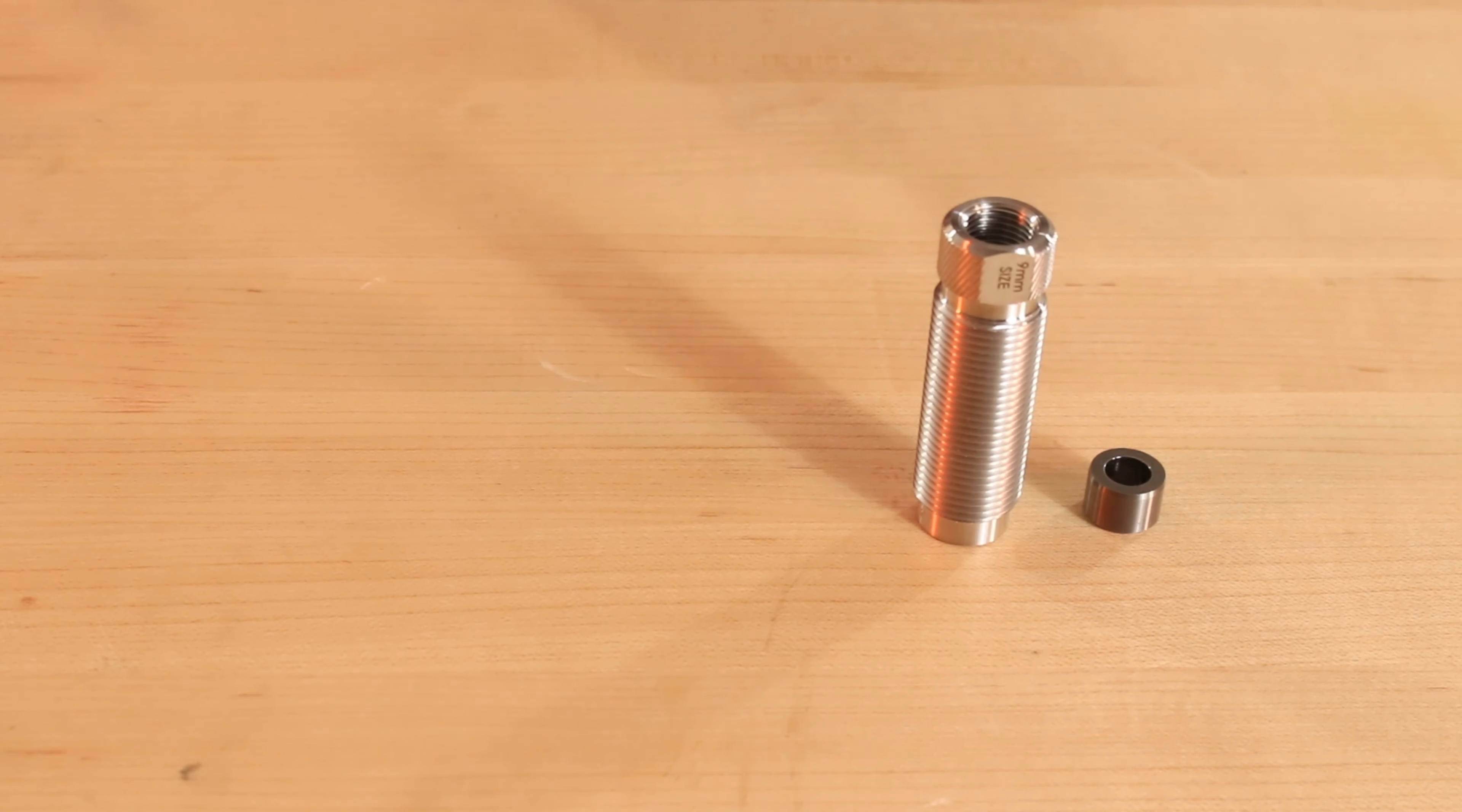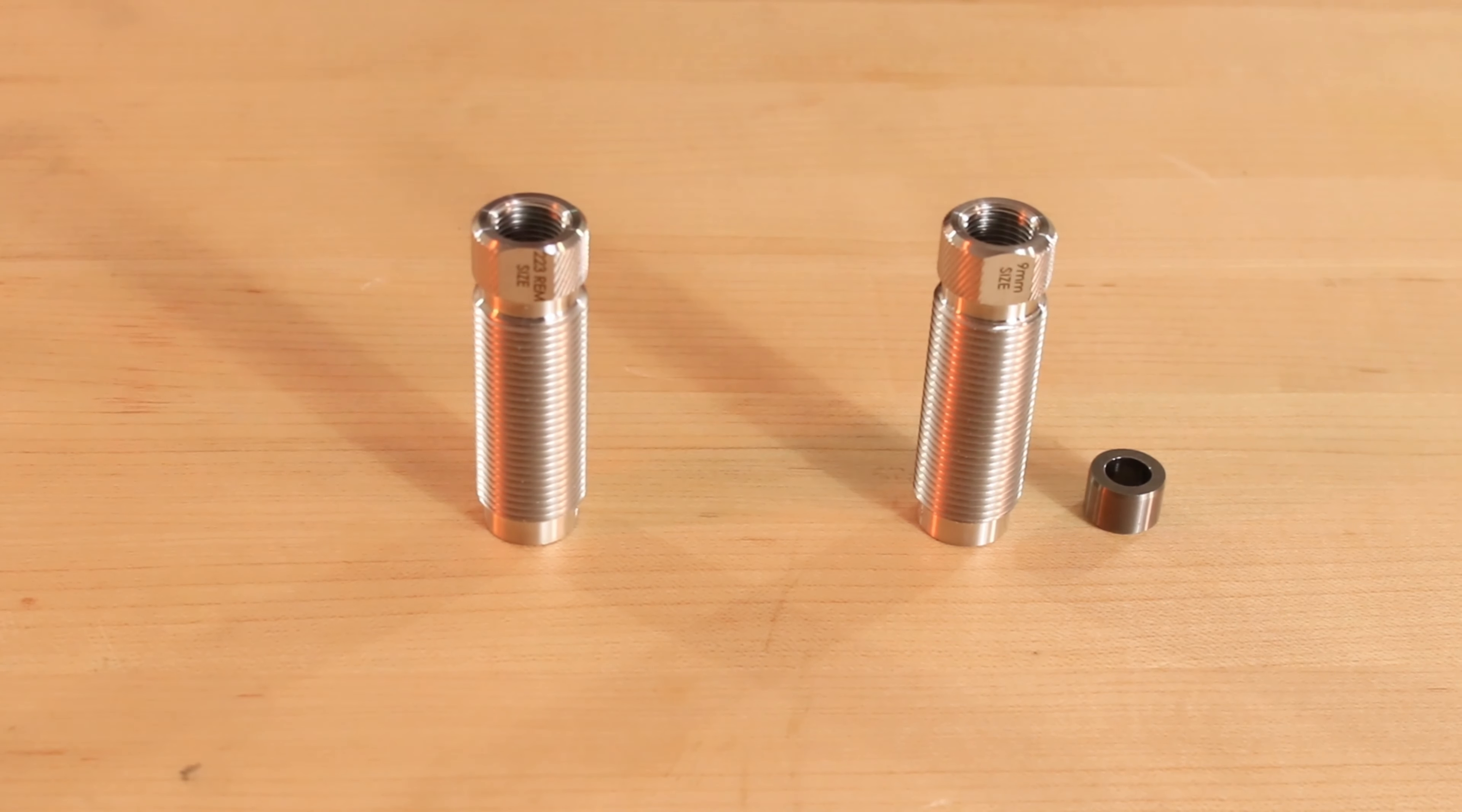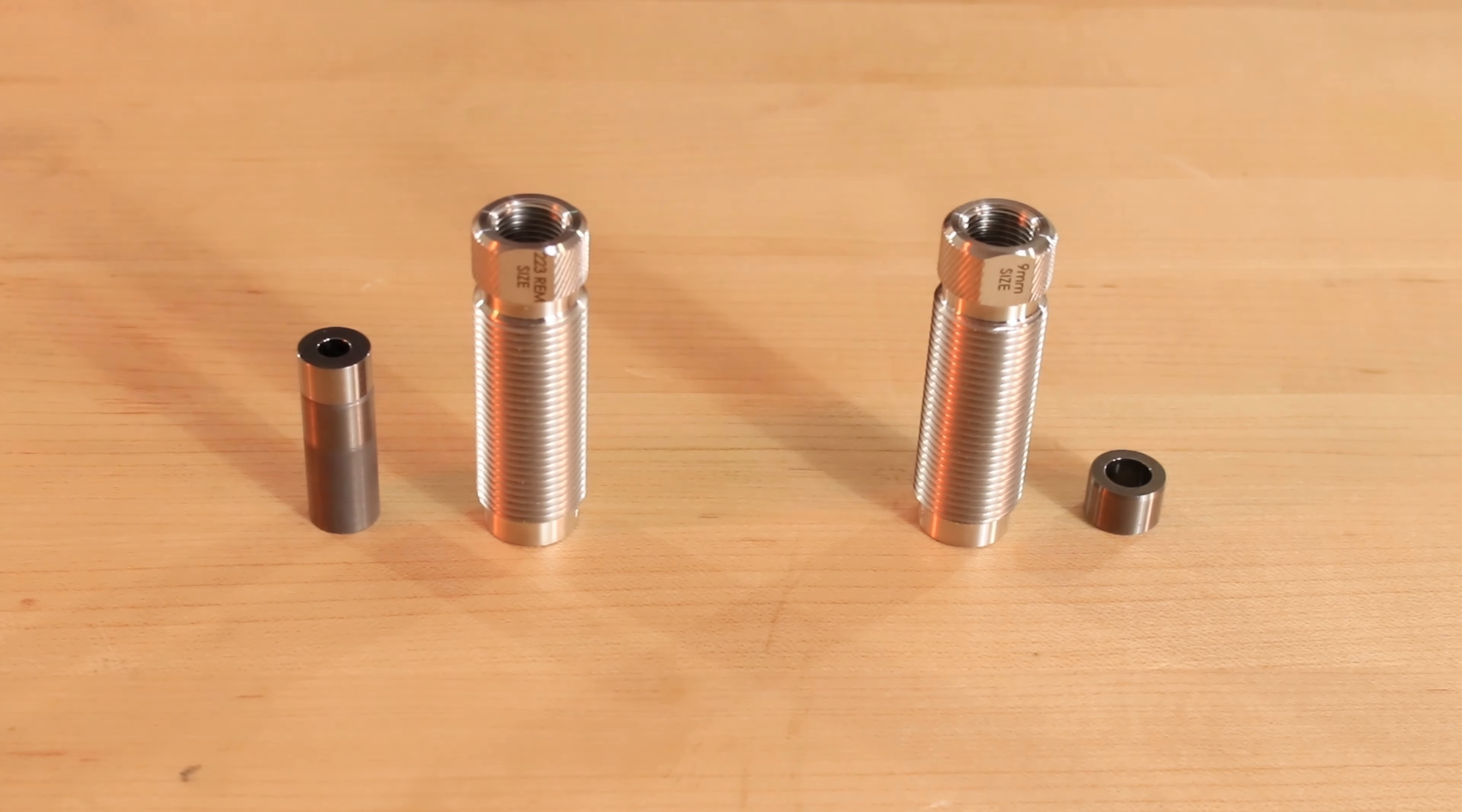Our pistol sizing dies have one carbide ring and our rifle sizing dies have two, one for the neck and one for the body.